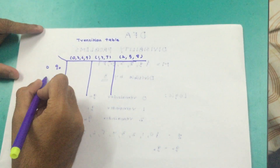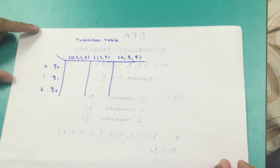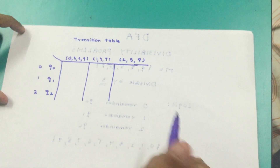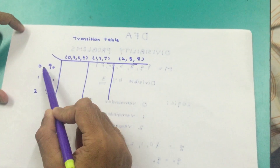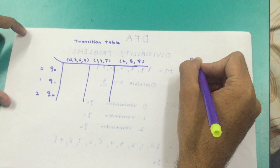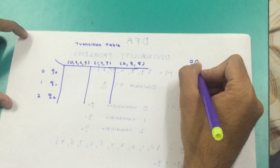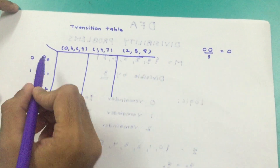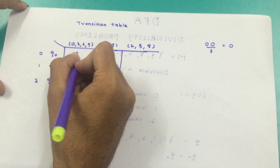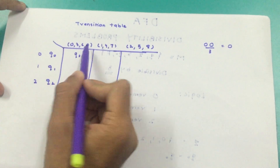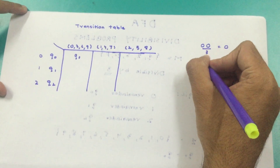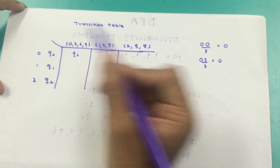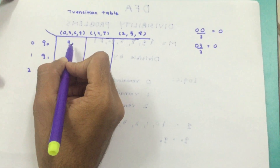Now q0 corresponds to remainder 0, q1 to remainder 1, and q2 to remainder 2. To check which state to go to: when in q0, take input 0 — 0 divided by 3 gives remainder 0, so I stay in q0. You can check with any number in that column: 03 by 3 remainder 0, 06 by 3 remainder 0, 09 by 3 remainder 0 — so for {0,3,6,9} from q0, I remain in q0.